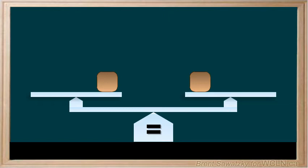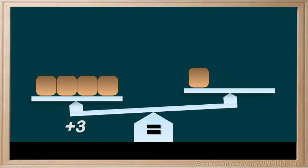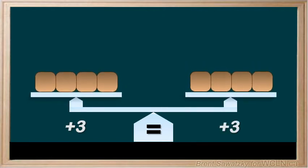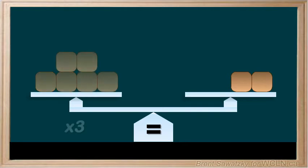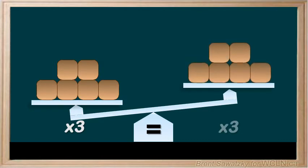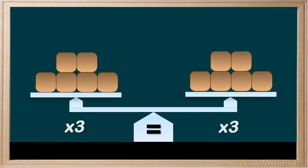If we add 3 to the left, we also have to add 3 to the right to get it back to equal. If I triple the left side, that is times by 3, we also have to triple the right side, or times it by 3, so that we're back to balanced, or equal.